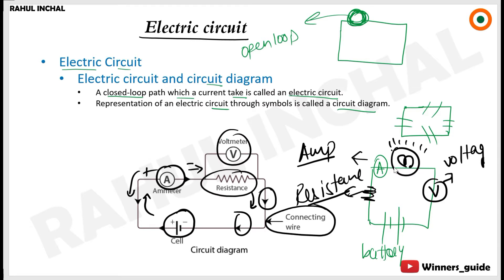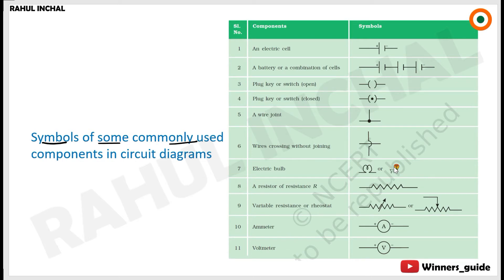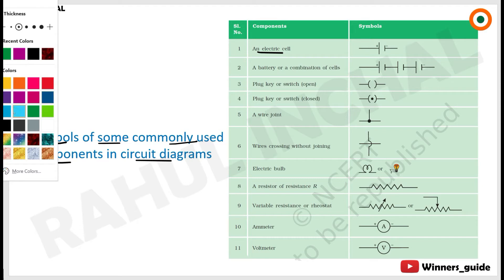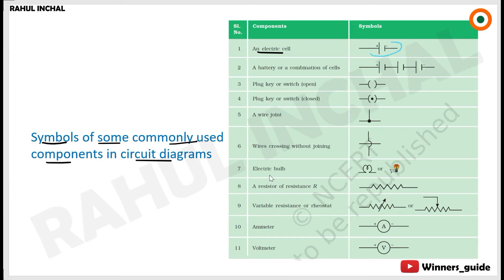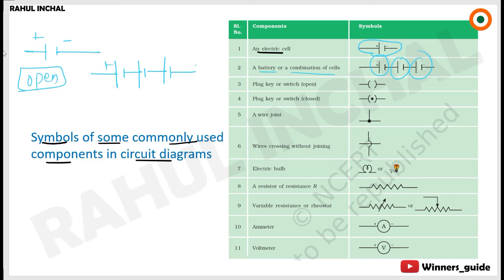Symbols of commonly used components in a circuit diagram: a cell is represented by a single pair of positive and negative lines. A combination of cells is called a battery — represented by multiple positive-negative pairs in sequence: positive, negative, positive, negative, positive, negative — connected in a loop, and a bulb will glow when current flows.